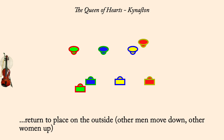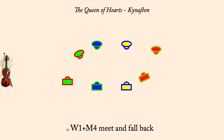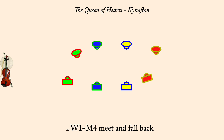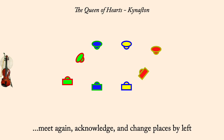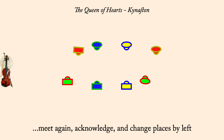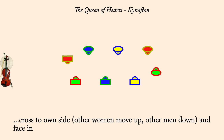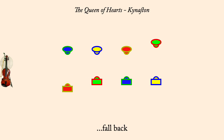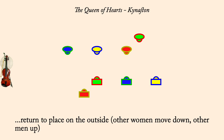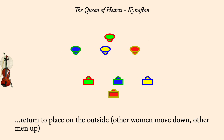Woman one, man four: meet and fall back. And turn single left. Meet again and change by left. Cross to own side, others make room. Fall back. Return to place, others make room.